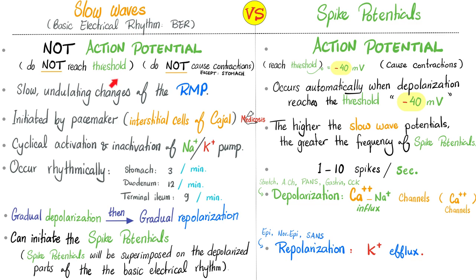Slow waves are just rhythms buzzing in the background — they are not true action potentials. They have a rhythm. In the stomach they happen three times per minute, in the duodenum about 12, and in the terminal ileum about 9. This is important, and you'll understand why very soon. As for spike potentials — true action potentials — they cause the true contractions, which means peristalsis movements and mixing movements.